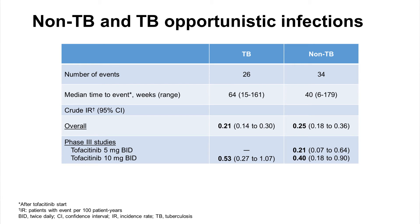Other opportunistic infections occurred with a crude incidence rate of 0.25 per 100 patient years and at a median of 40 weeks after tofacitinib start. In Phase III studies, the incidence of non-TB opportunistic infections trended higher in patients with 10 mg twice daily dosage, although again this difference was not statistically significant as compared to the 5 mg dosage group.